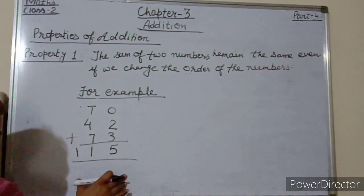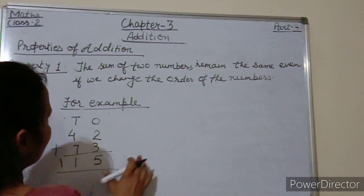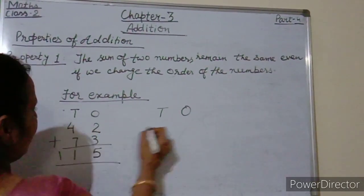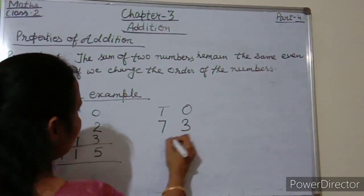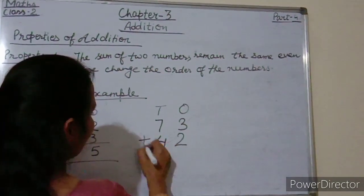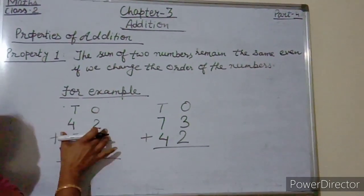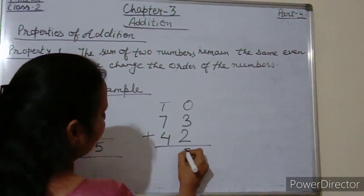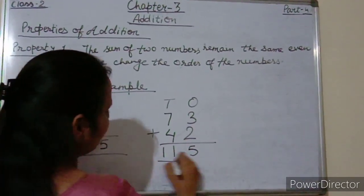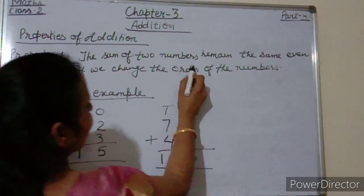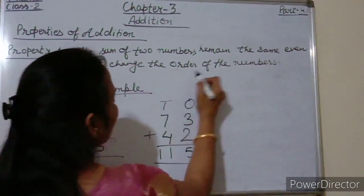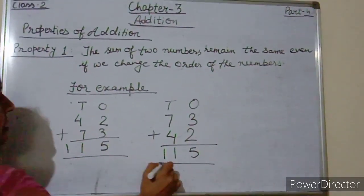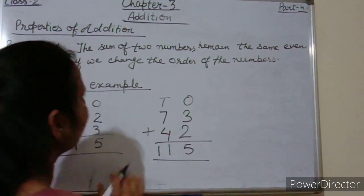See students, if we change the order of these numbers, the sum will be the same. Here we are writing 73 plus 42. We have only changed the order of these numbers — the addend numbers we have changed. See: 3 plus 2 is 5, and 7 plus 4 is 11. The sum of 2 numbers remains the same even if we change the order of the numbers. We changed the order here but the sum remains the same.